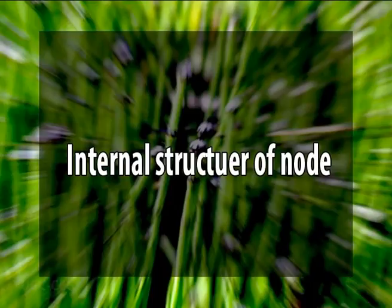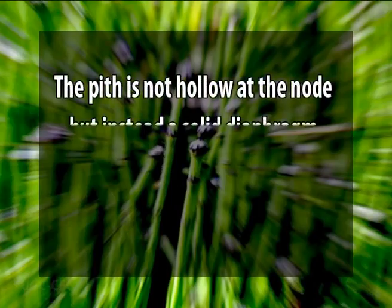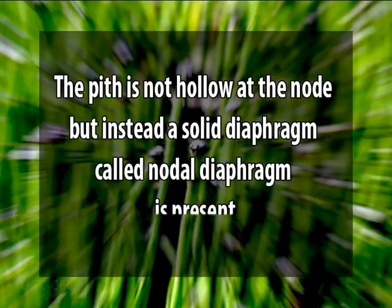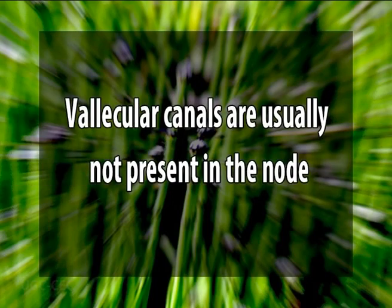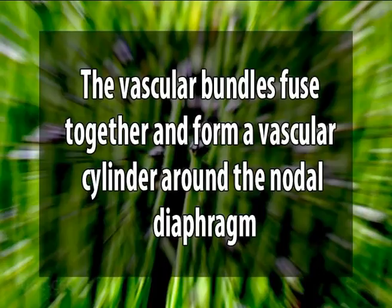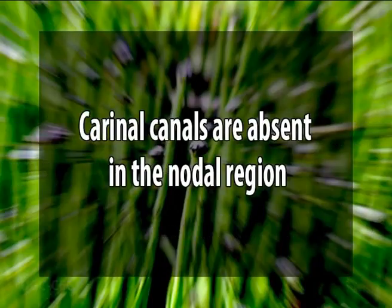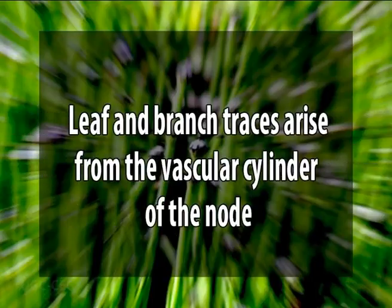Now let us discuss the internal structure of the node. When we cut the transverse section of the node, it shows certain features different from the internode: the pith is not hollow at the node, but instead a solid diaphragm called a nodal diaphragm is present; vallecular canals are usually not present in the node; the vascular bundles fuse together and form a vascular cylinder around the nodal diaphragm; carinal canals are absent in the nodal region; and leaf and branch traces arise from the vascular cylinder of the node.